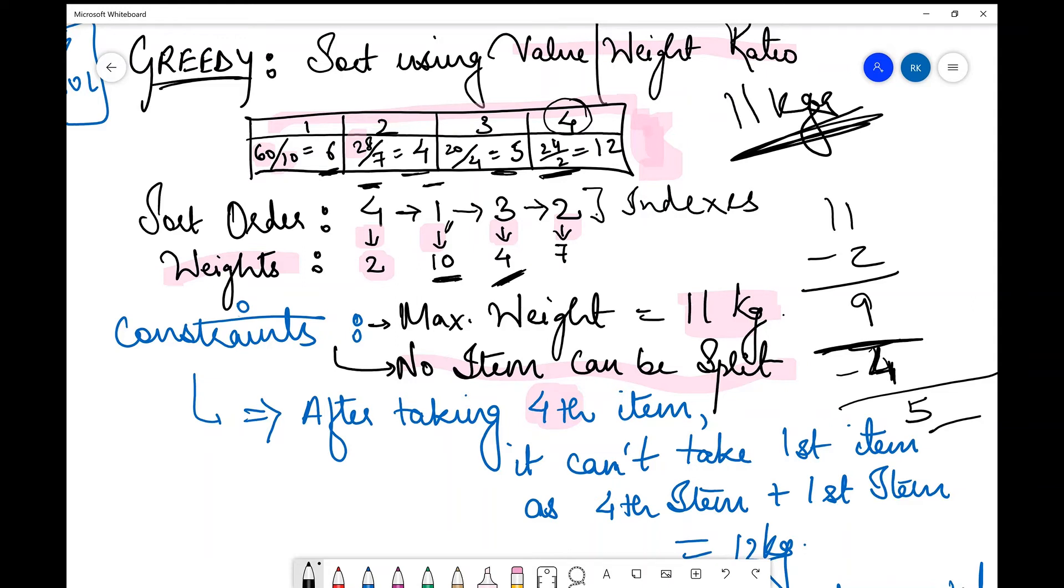And again if you go through this order over here you had to choose this second item next which has weight 7 kgs but you are left with the constraint of only 5 kgs more. So therefore you cannot choose this second item. So the only items that you could choose using the greedy approach was the fourth item and the third item.